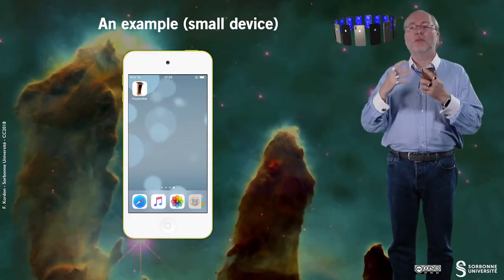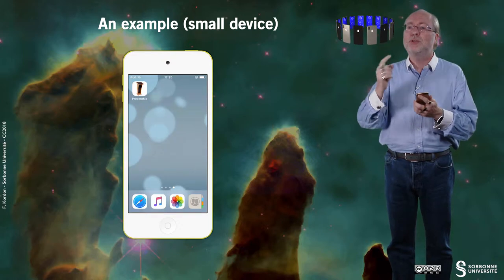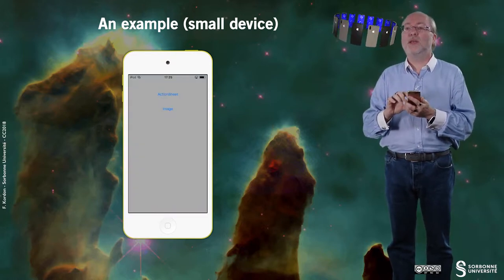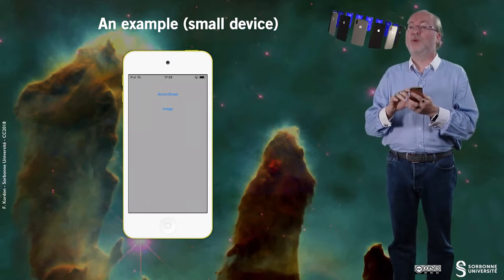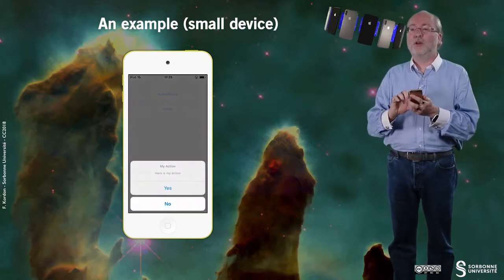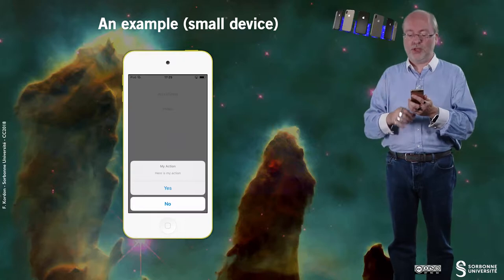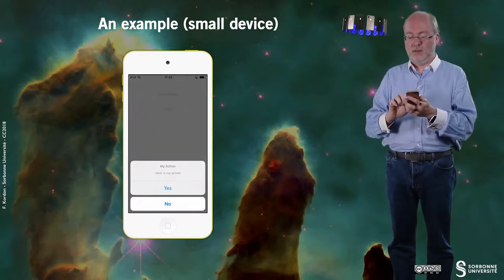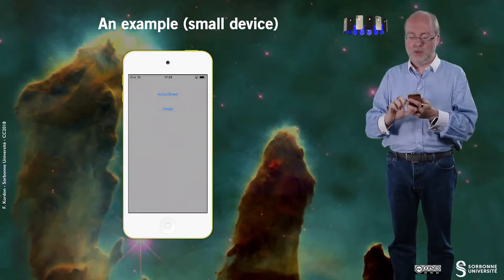Let's have a look on a small example that I am first running on a small device. So, here I have two buttons. The first button allows me to drop an action sheet.